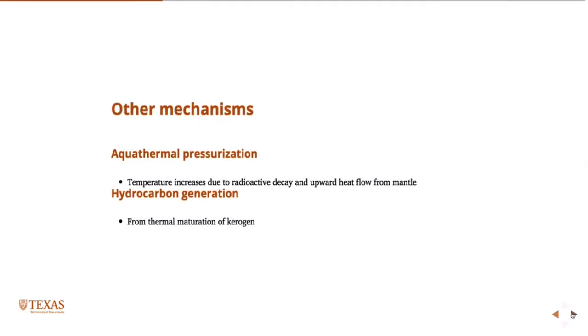So there are other mechanisms. These are sort of second-order effects. You could have temperature increase due to radioactive decay, radioactive decay that's ongoing everywhere in the earth. That can increase the temperature a little bit. And you can also have upward heat flow from the mantle. But these are very slow processes. Heat diffusion is a very slow process. And so if this occurs, it's secondary to the other things we've talked about.